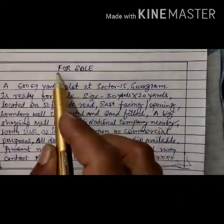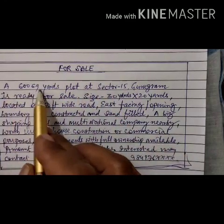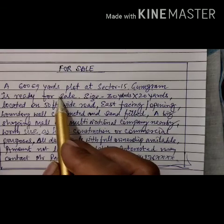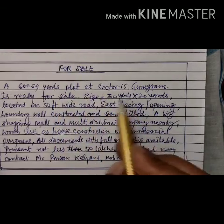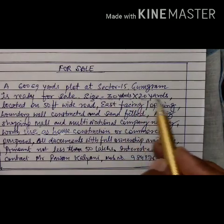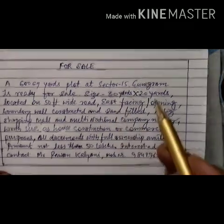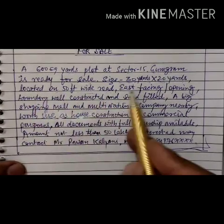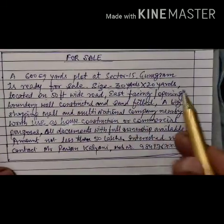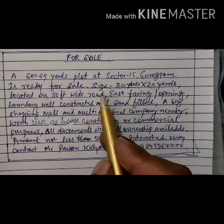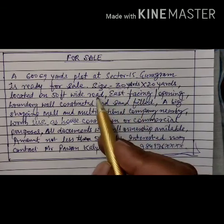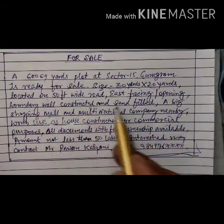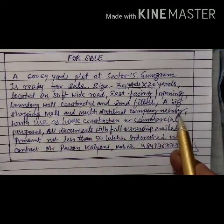The heading or title will be 'For Sale.' A 600 square yard plot at Sector 15, Gurugram is ready for sale. Size: 600 square yards — 30 yards by 20 yards — located on a 50-feet wide road. East facing, boundary wall constructed and sand filled. A big shopping mall and multinational company nearby.